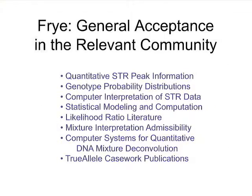There was a Fry hearing involving general acceptance in the relevant community. It was determined by the court that the relevant community comprised statisticians, mathematicians, and various scientists who develop, test, discuss, publish on, and present DNA interpretation methods. We showed articles about quantitative STR peak information — how that has been standard for 20 years. Genotype probability distributions have been around since Mendel. Computer interpretation of STR data has been around for 20 years. Statistical modeling and computation with modern methods has really come into its own in the last 20 years and pretty much dominates much of scientific inquiry in physics, social sciences, economics, gene chips, and so on.